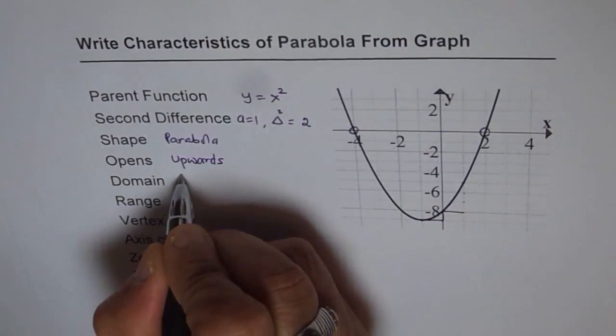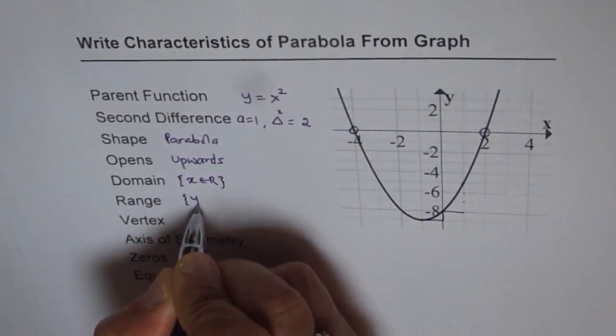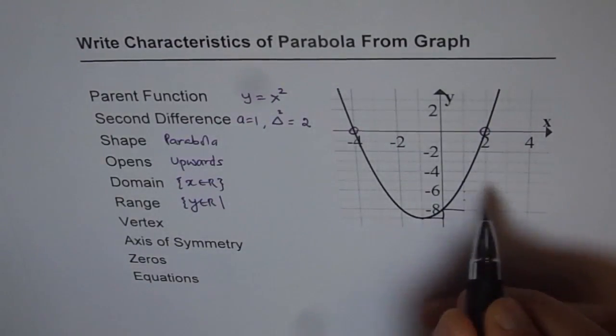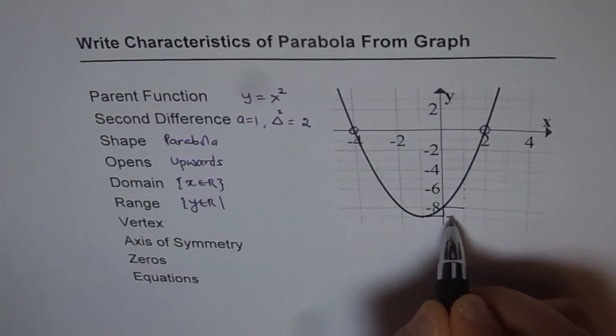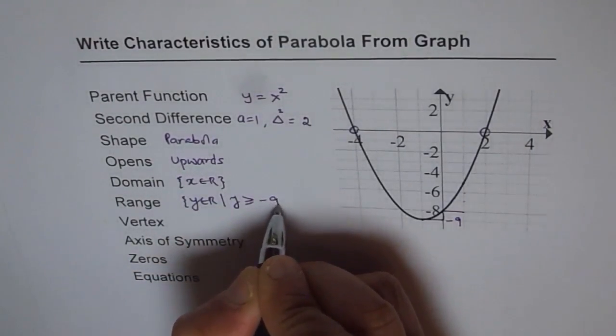Domain for all parabolas is x belongs to real numbers and range is y belongs to real numbers. But there is a restriction. From the vertex, it is up. The vertex is at minus 9, so we say y is greater than or equal to minus 9.